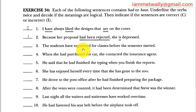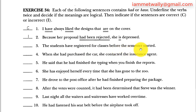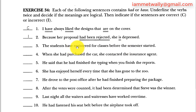Sentence three: 'The students have registered for classes before the semester started.' The subject is 'the students,' 'have registered' is present perfect, and 'started' is past simple. Have registered means the action happened in the past and up to now, but the students did this before the semester started — so the first action cannot be present perfect paired with a past simple second action. This is wrong; it should be 'the students registered.' Sentence three is incorrect.